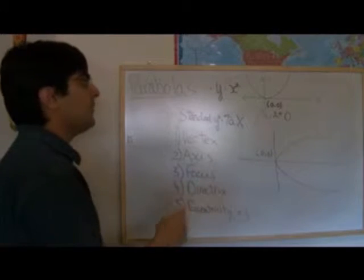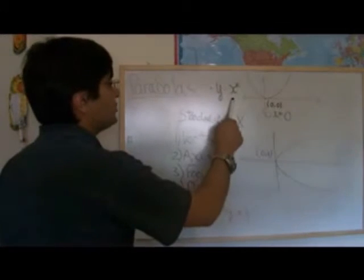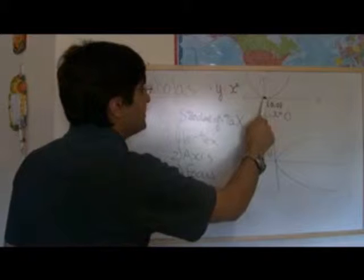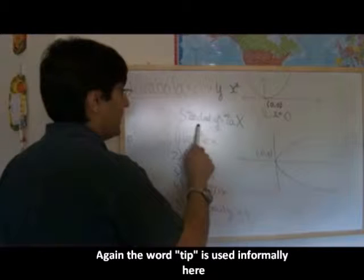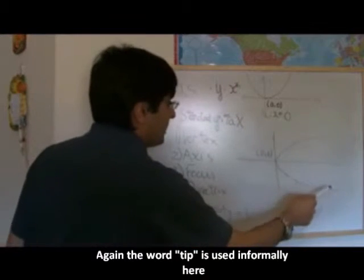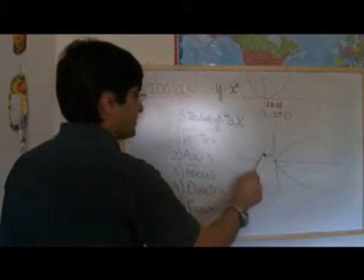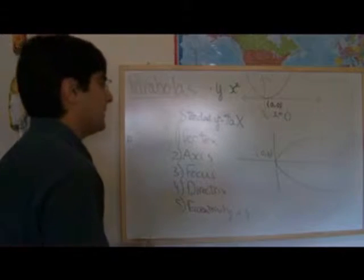The first feature I look for is the vertex. The vertex, as we know, is the tip of the parabola. In the case of y equals x squared, the vertex is here. It's the tip of the parabola at 0, 0. In the same way, the standard parabola has a vertex at 0, 0 as well, because this is the tip of the parabola.